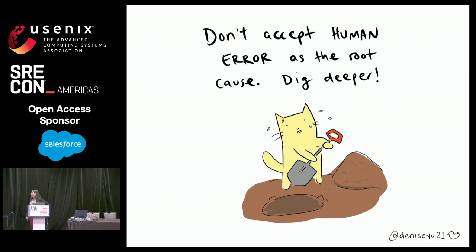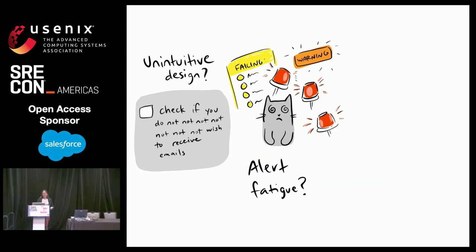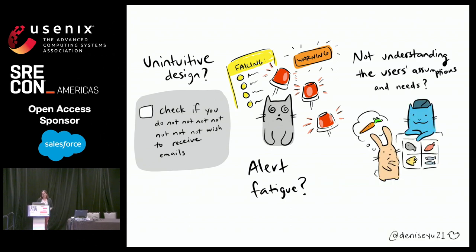But in any case, look further — do the hard work to try to figure out what actually happened. Look for the contributing factors. Were users maybe misled by unintuitive design? Did they suffer from alert fatigue? Maybe we failed to understand the assumptions that people would bring into the control room with them.